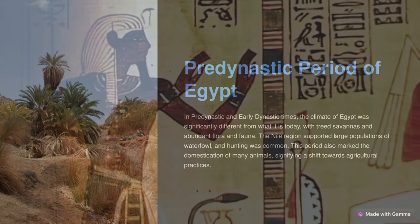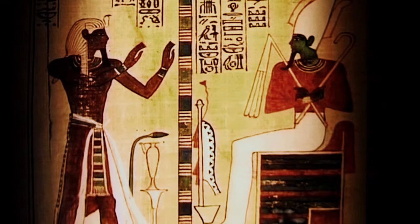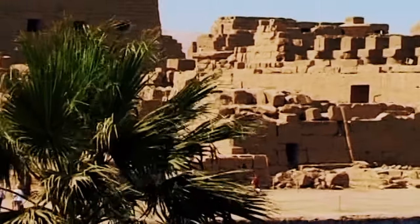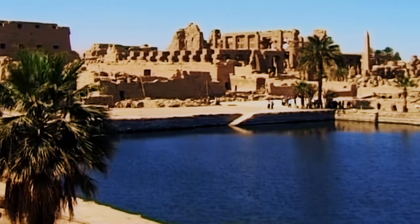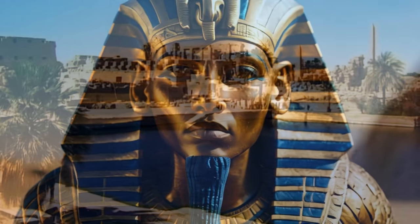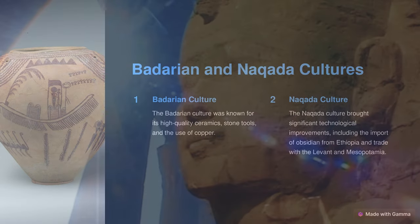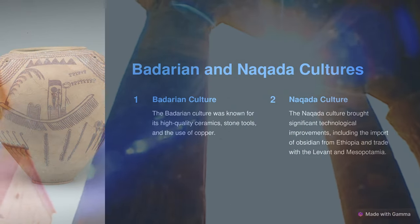Let's start with the pre-dynastic period of Egypt. In pre-dynastic and early dynastic times, the Egyptian climate was much less arid than it is today. Large regions of Egypt were covered in treed savannah and traversed by herds of grazing ungulates. Foliage and fauna were far more prolific in all environs, and the Nile region supported large populations of waterfowl. Hunting would have been common, and this is also the period when many animals were first domesticated. By about 5500 BC, small tribes living in the Nile Valley had developed into a series of cultures demonstrating firm control of agriculture and animal husbandry, identifiable by their pottery and personal items such as combs, bracelets, and beads. The largest of these early cultures in upper southern Egypt was the Badarian culture, known for its high-quality ceramics, stone tools, and its use of copper.